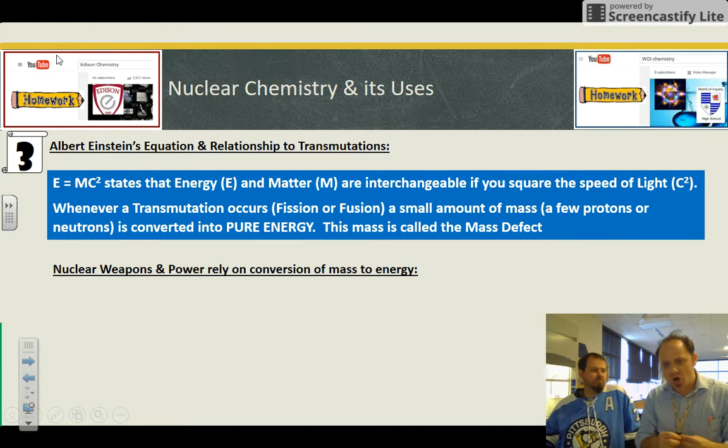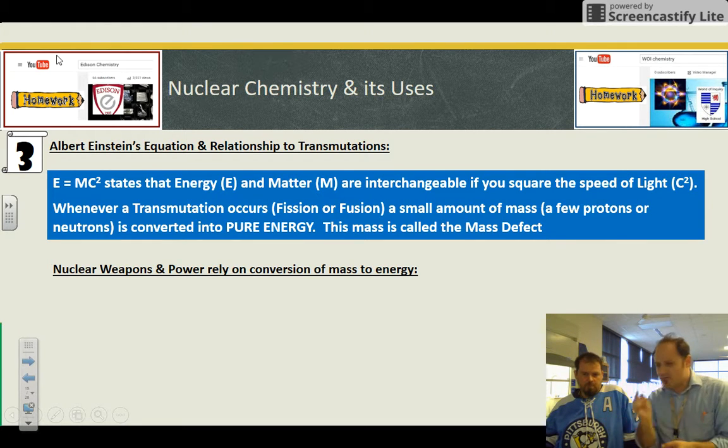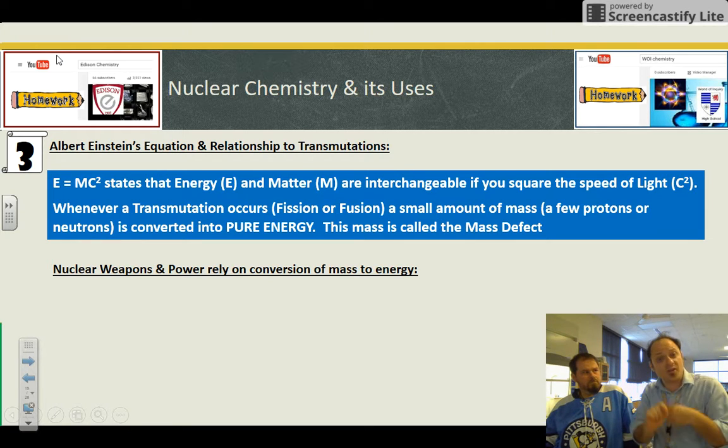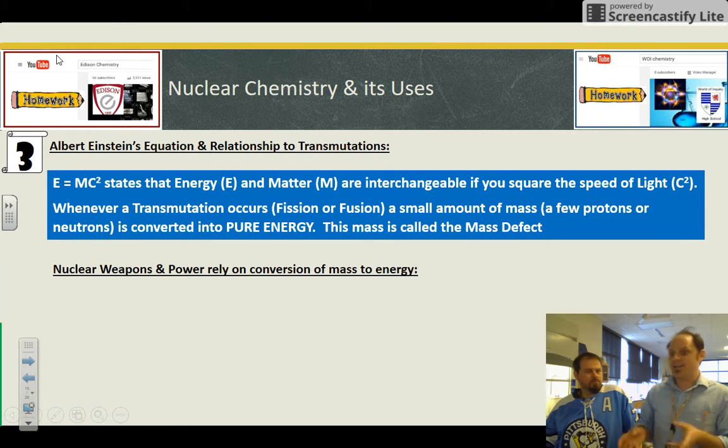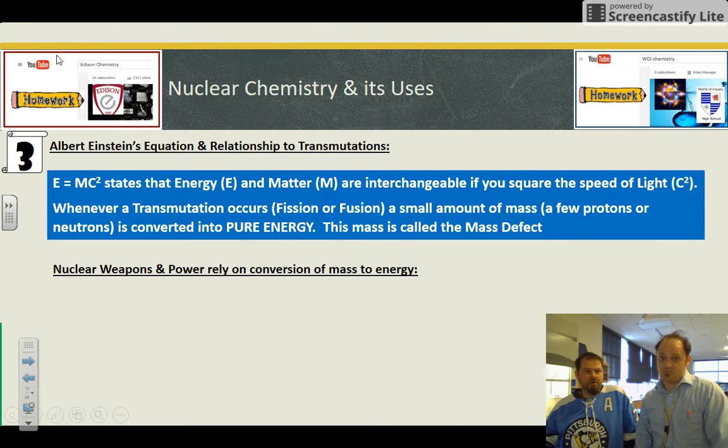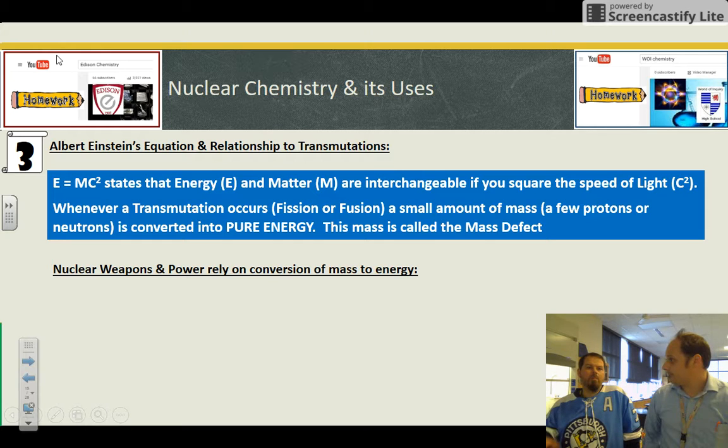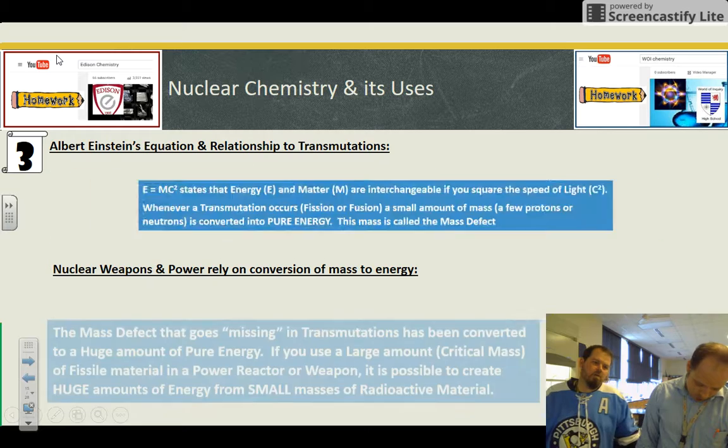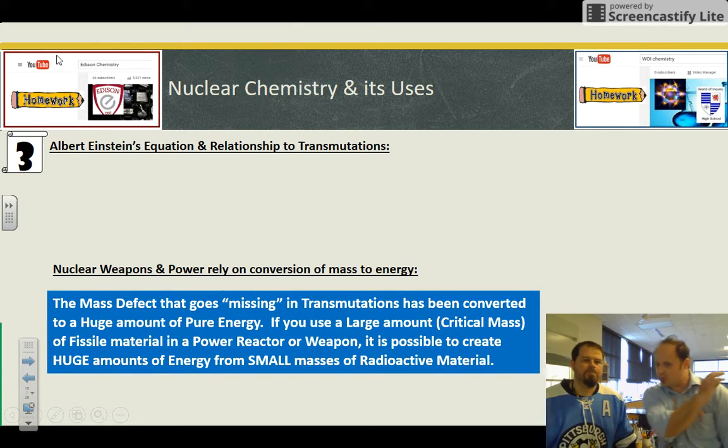Whenever a transmutation occurs, fission or fusion or natural, a very small amount of mass, a few protons or something to that effect actually gets converted into pure energy. This is called the mass defect. It's the missing mass that got turned into pure energy. And we humans actually use that for two major uses for energy. When we balance our equations, that mass defect won't come in because it's so tiny. We don't even miss it.